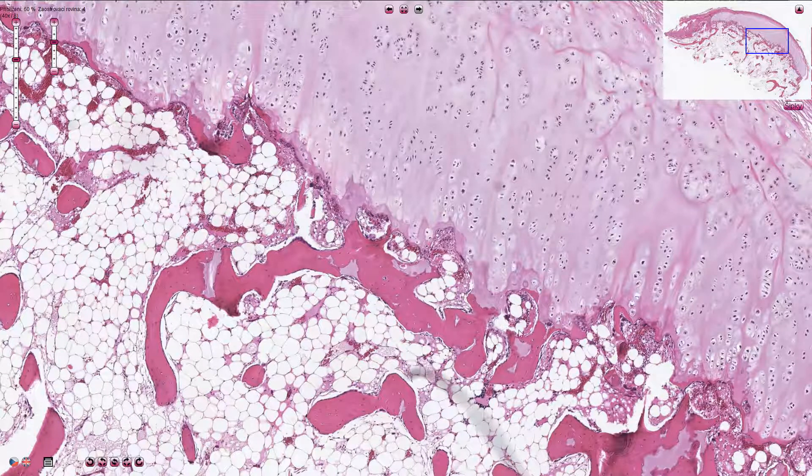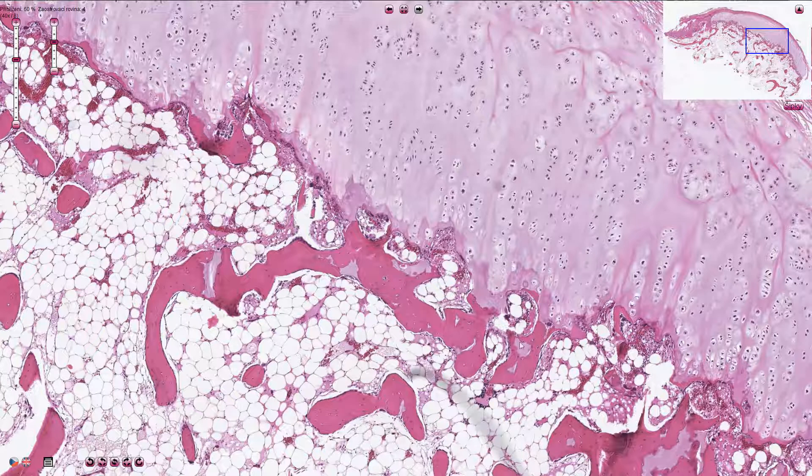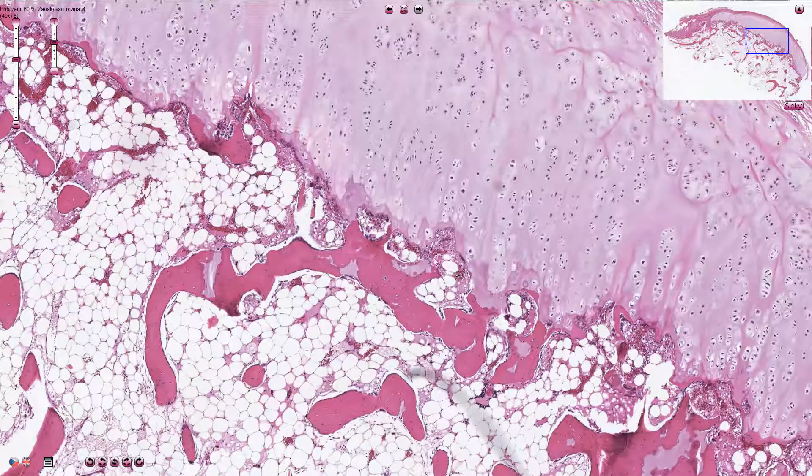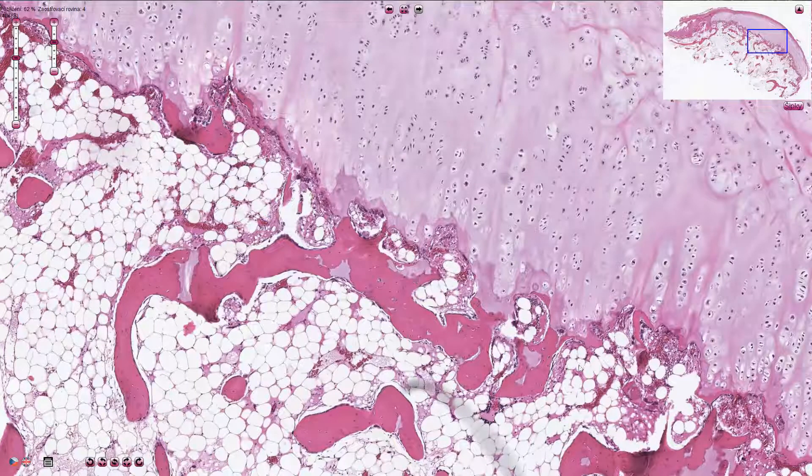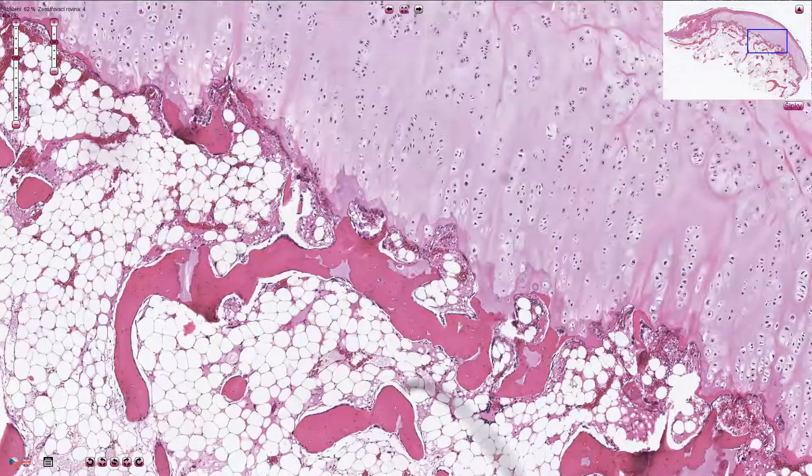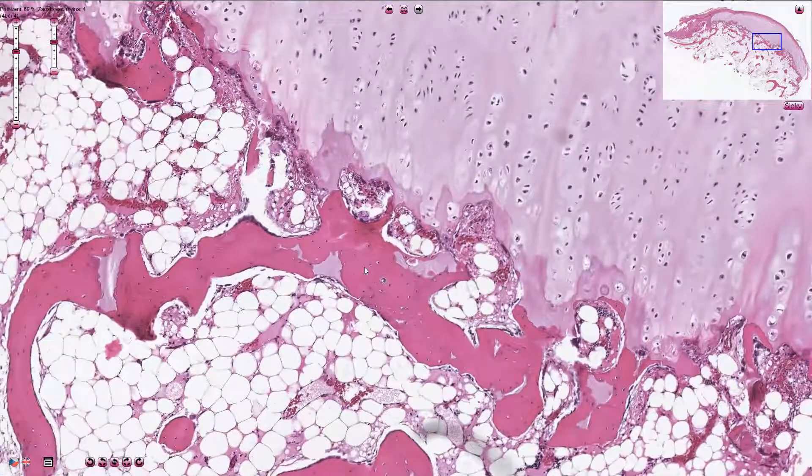Here we have the area which resembles normal endochondral ossification, and this is characterized by transformation of the cartilage into the bone tissue. This area resembles normal growth plate, and here we see ossification and trabecular bone formation.